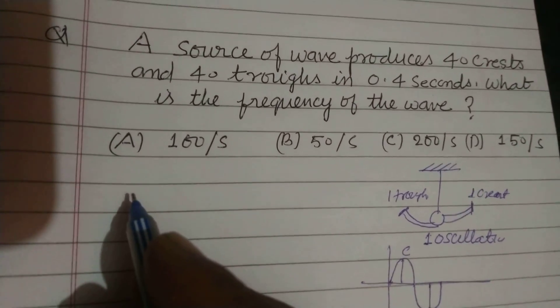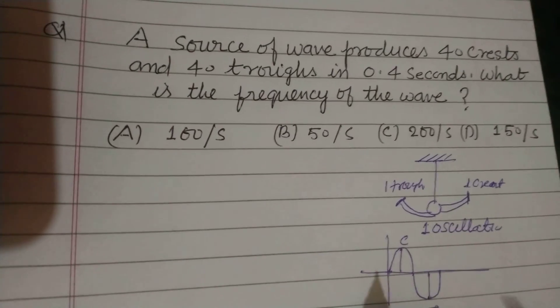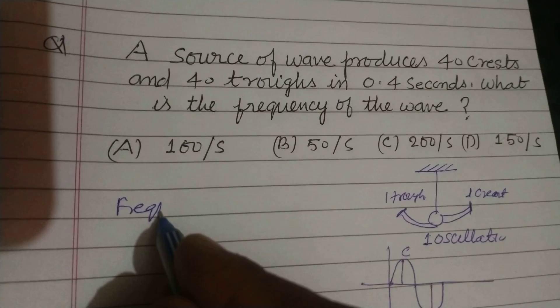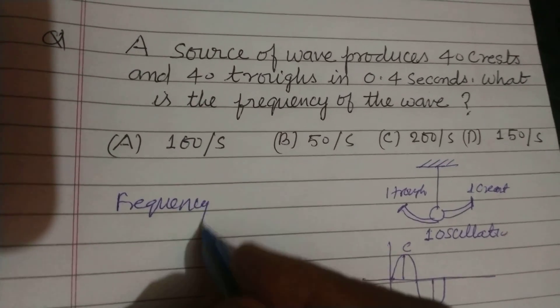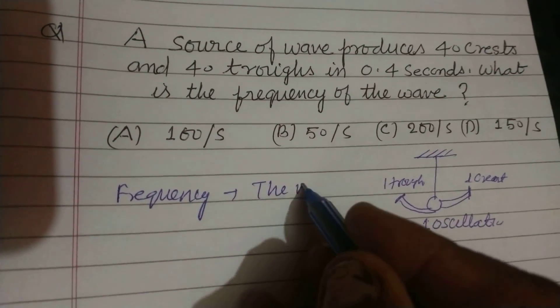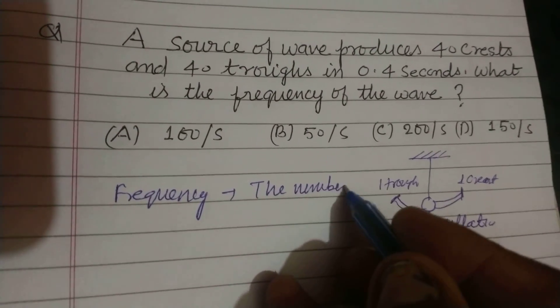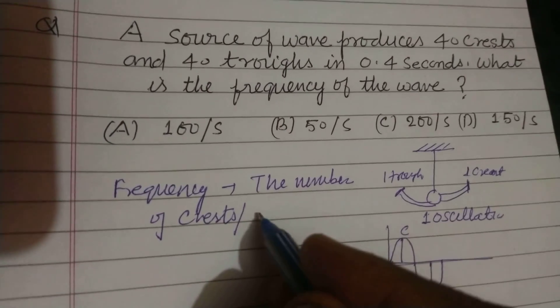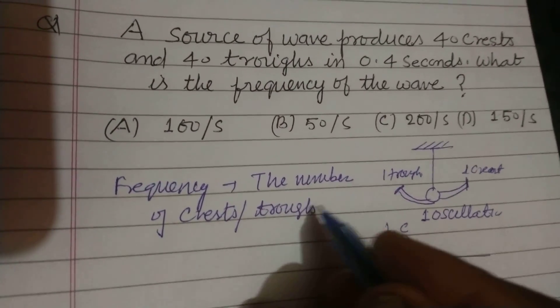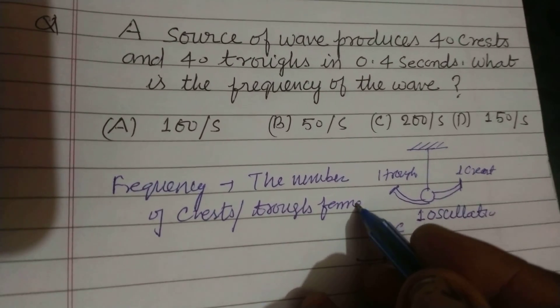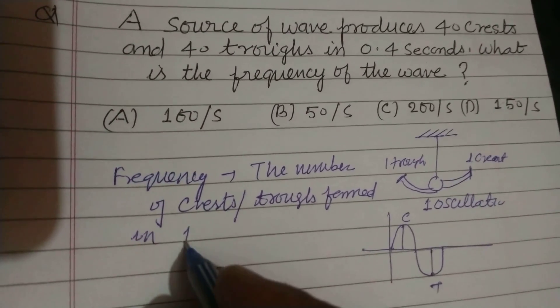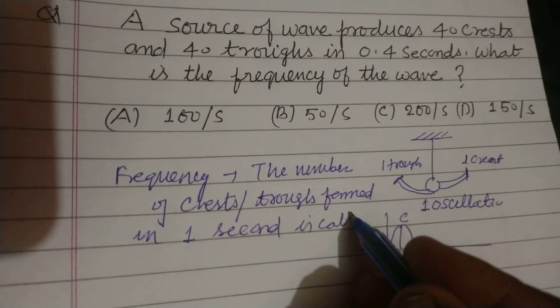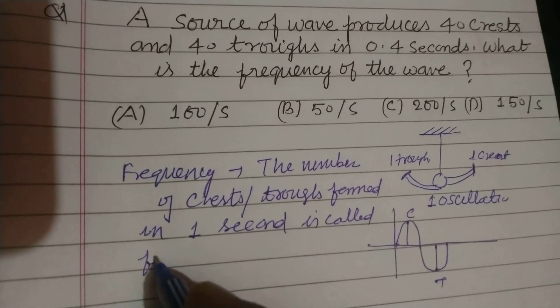So in one oscillation one crest and one trough is formed. So what is frequency? Frequency is the number of crests or troughs formed in one second. This is called frequency of oscillation or frequency of the particle.